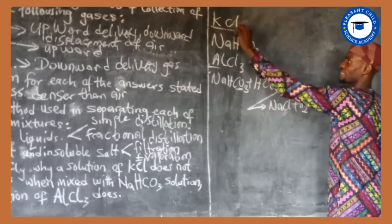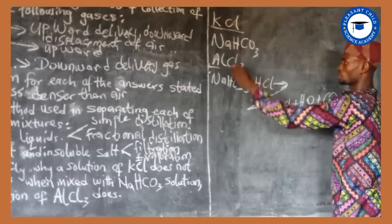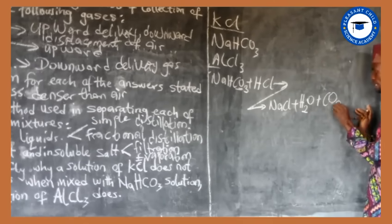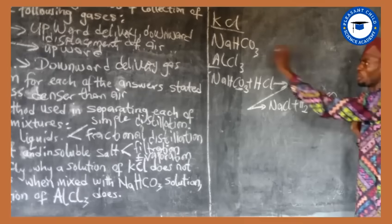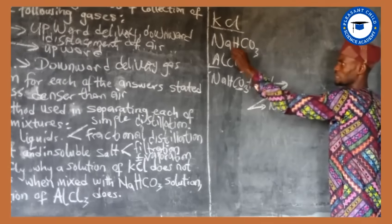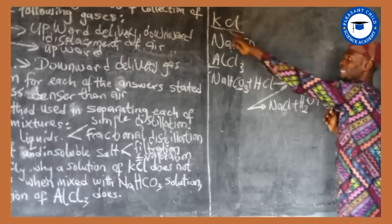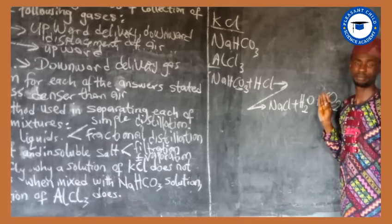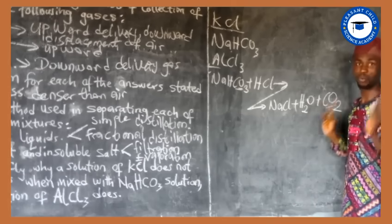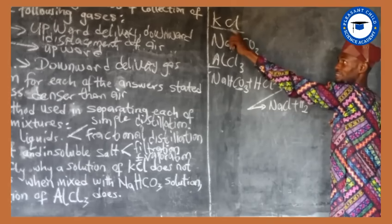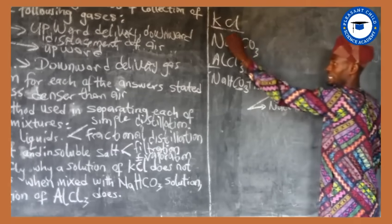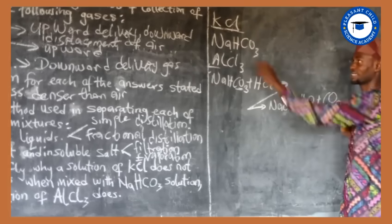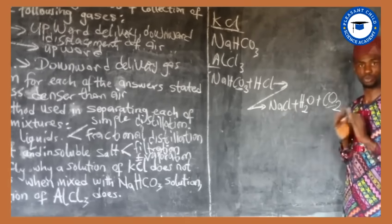KCl when added to NaHCO3 does not give a gas — that gas being carbon dioxide. The reason is simple: KCl will not hydrolyze to give an acid, because KCl is a salt derived from a strong base and a strong acid, and therefore does not hydrolyze.